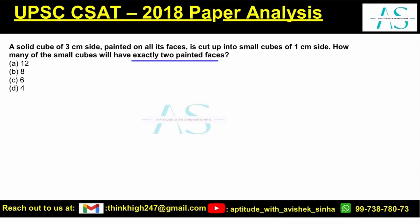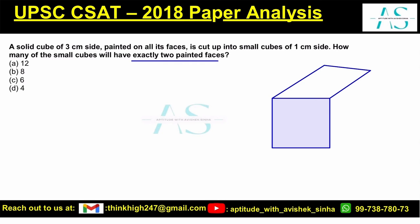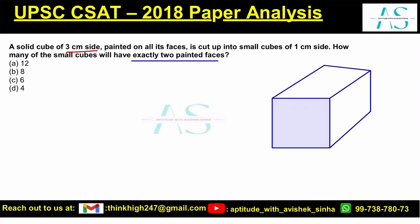Let's start by drawing the cube here. It is a 3 cm cube — this side is 3 cm, this is also 3, this is also 3. It is cut into 1 cm pieces, meaning 1, 1, and 1. Which means we have to put 2 cuts along each direction.